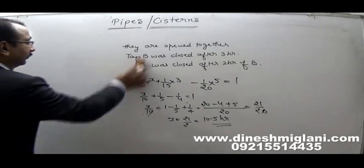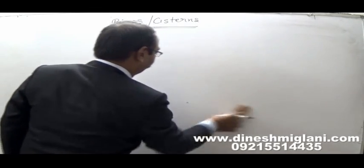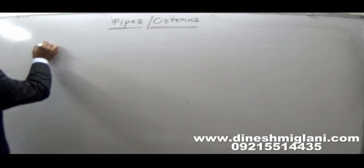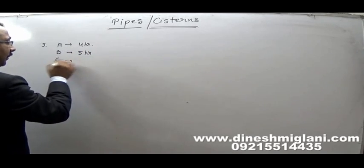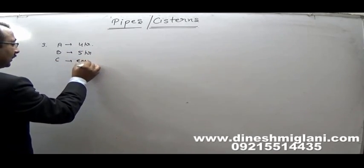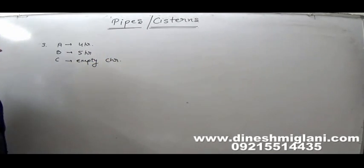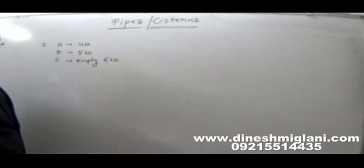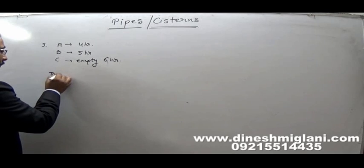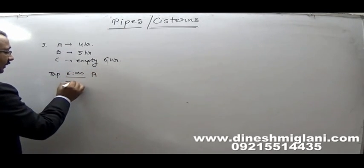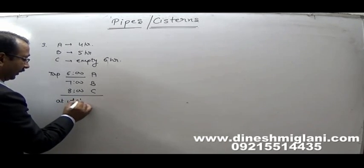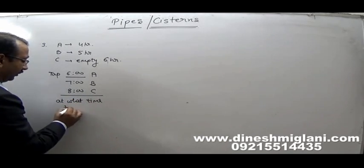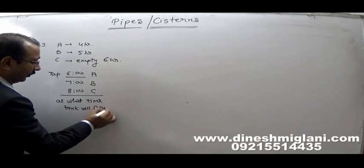Let's move to the next variety of question. There are three taps A, B and C. Tap A can fill the tank in 4 hours, Tap B can fill in 5 hours, and Tap C can empty the tank in 6 hours. Tap A was opened at 6 o'clock, at 7 o'clock Tap B was opened, at 8 o'clock Tap C was opened. The question is: at what time will the tank be filled?